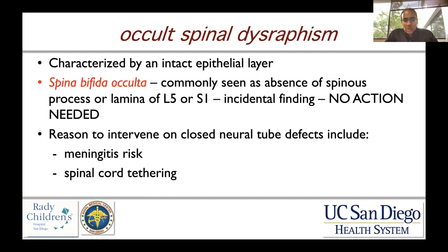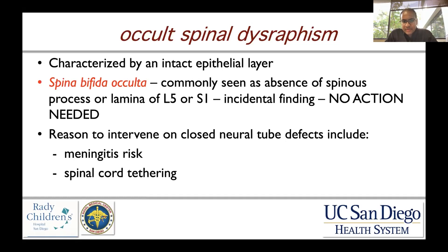Spina bifida occulta is a term you'll see a lot on radiology reports and consult requests. It's a commonly seen abnormality where there's an absence of a spinous process or lamina of L5 or S1 — it's an incidental finding and no action is needed. When thinking about closed neural tube defects, there are reasons to intervene and reasons to observe. The reason to intervene is if there's a meningitis risk — for example, in the setting of a dermal sinus tract with a punctate connection to the outside world — or if there's spinal cord tethering or concern for spinal cord tethering.